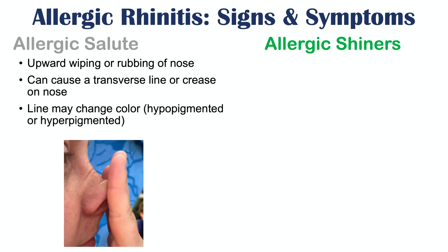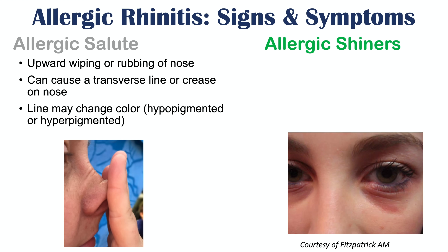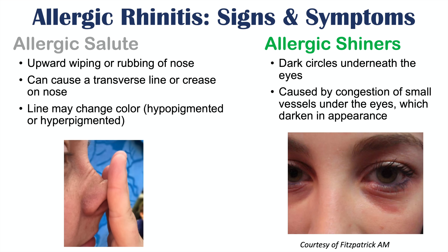There is also something called allergic shiners — dark circles underneath the eyes. They are caused by congestion of small vessels under the eyes. All of those inflammatory mediators can lead to congestion of small vessels under the eyes, which darkens the appearance underneath the eyes.